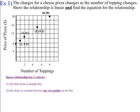In example one, it says the charges for a cheese pizza changes as the number of toppings changes. Show the relationship is linear and find the equation for the relationship. So what we want to do is take a look at these numbers and see if there's a relationship. We know the two criteria. The data has to form a straight line. If we took a ruler, we could line them all up and lay them onto a line. So that's the first criteria.